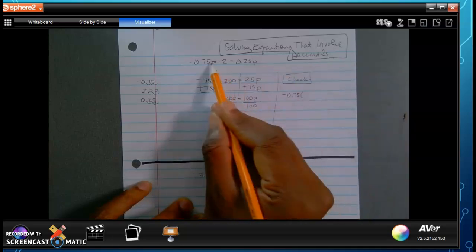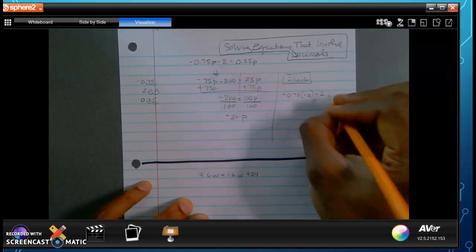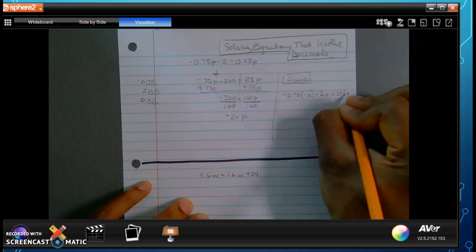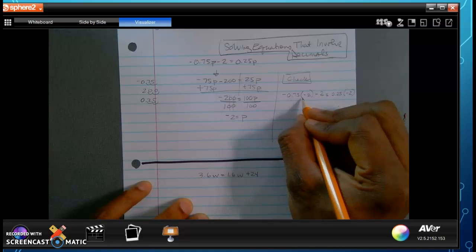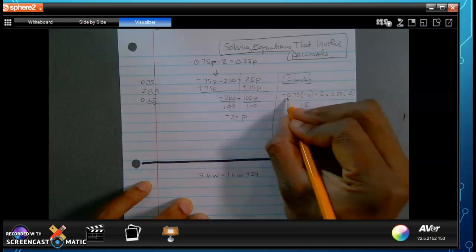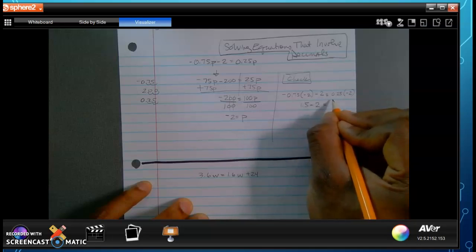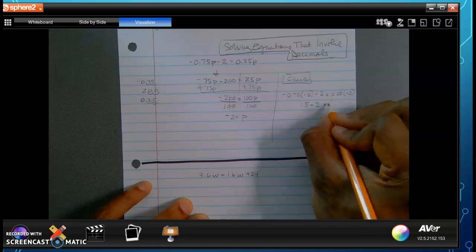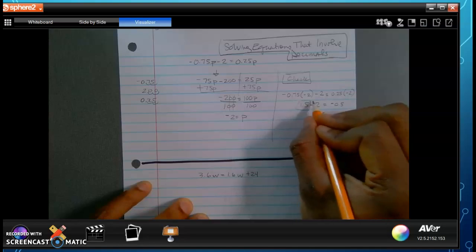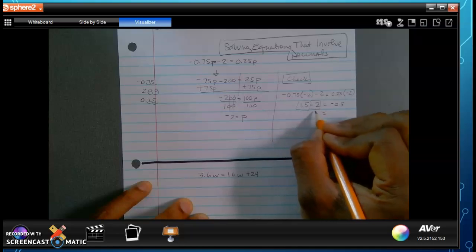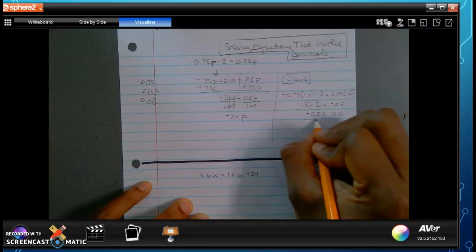I'm going to substitute the p value here for what I came up with. That's negative 2 minus 2. This minus 2 right here goes along with that one. That's going to be equal to 0.25 times negative 2. Through the magic of YouTube, when I multiply negative 0.75 times negative 2, that's going to give me a positive 1.5 because negative and negative together multiplied will be positive. Again, negative 2 times 0.25 is going to give me negative 0.5. When I simplify this 1.5, combining these numbers, this is a positive, this is a negative. The highest absolute value becomes the sign of the answer. I'm going to subtract these two. Therefore, it will be negative 0.5 is equal to negative 0.5. Here's my check. Done.